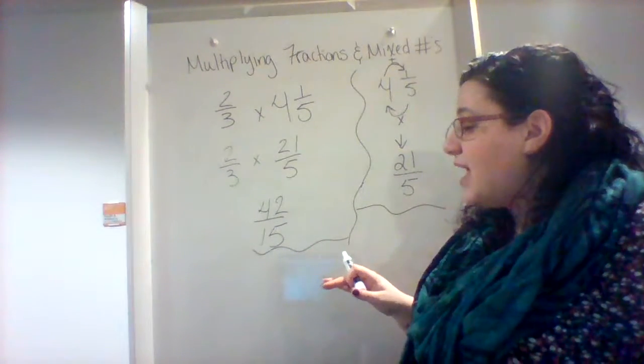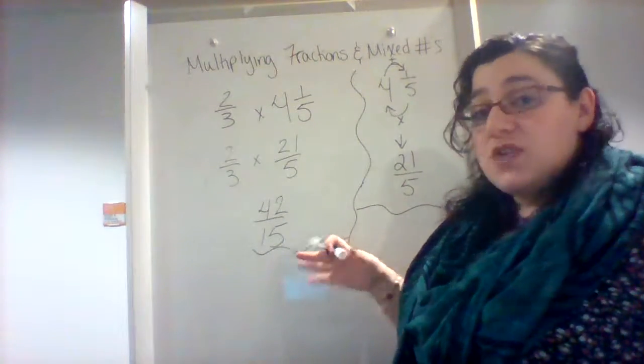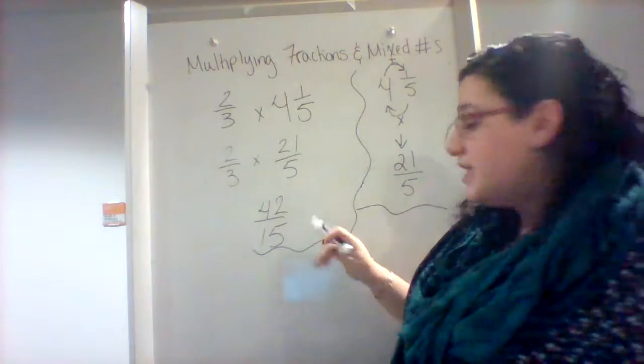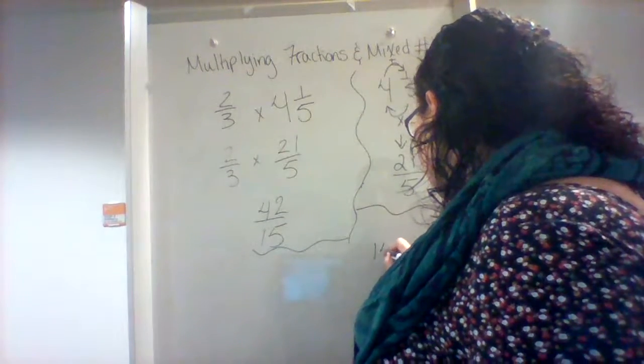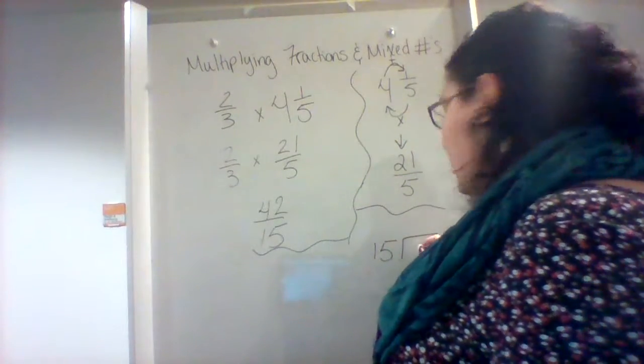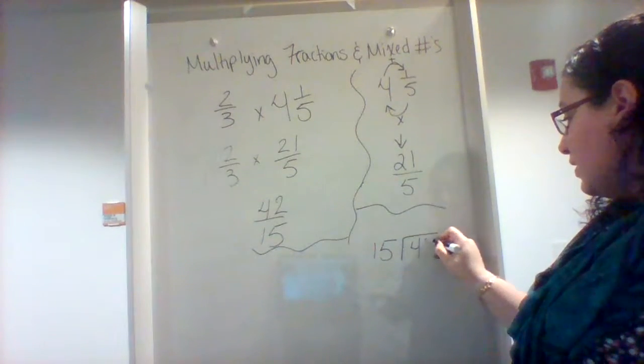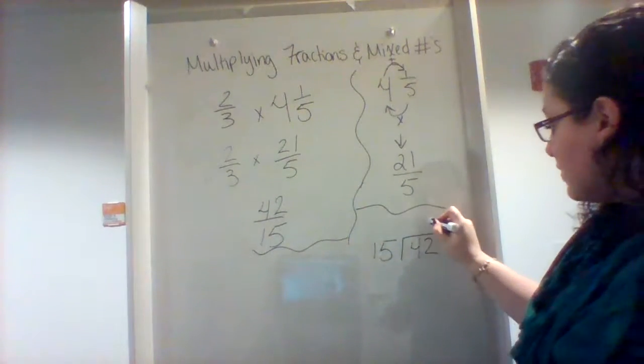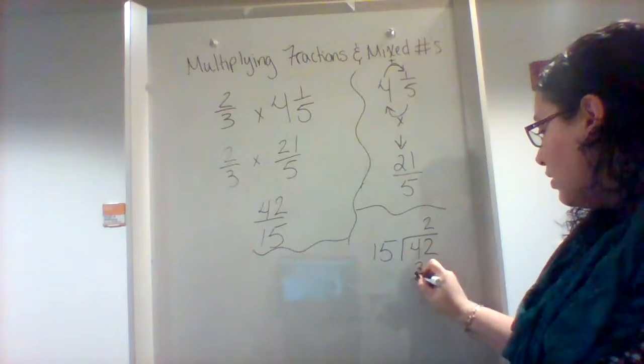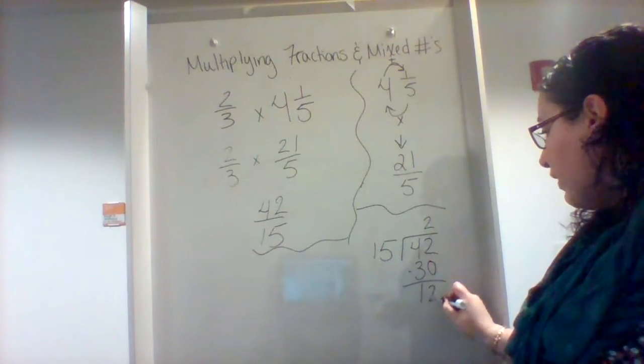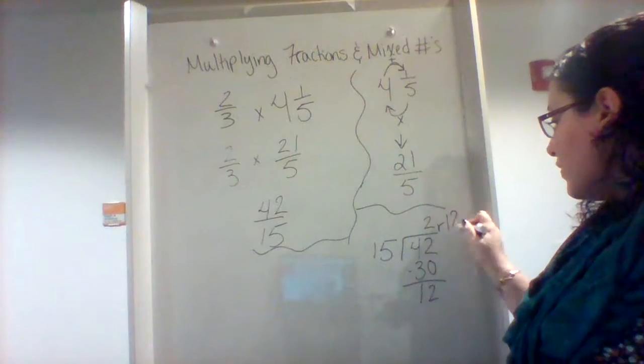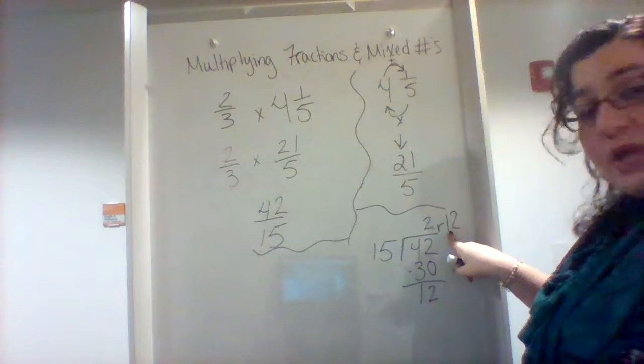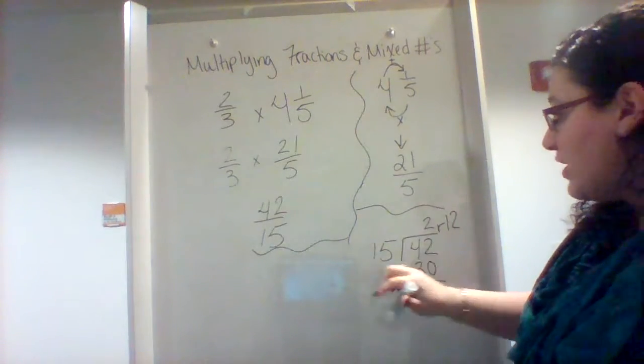Now remember we said that fractions are division. So if I have 42 over 15, it is 42 divided by 15. 15 goes on the outside, the 42 goes on the inside. And 15 will go into 42 twice. That's 30, and you'll have a remainder of 12. So your quotient becomes your whole number, your remainder becomes your numerator, and your denominator stays the same. So my answer is going to become 2 and 12 fifteenths.